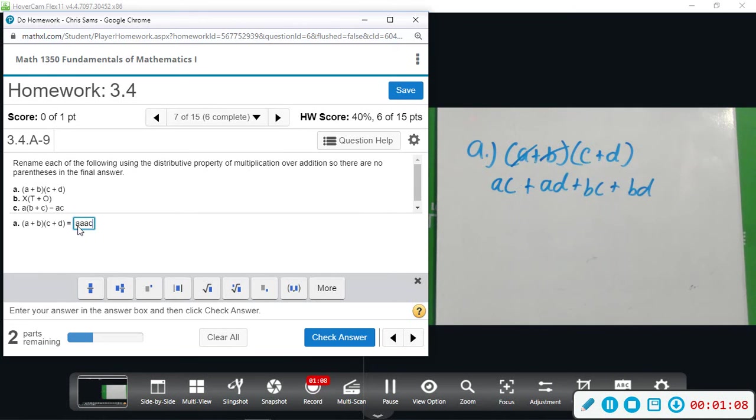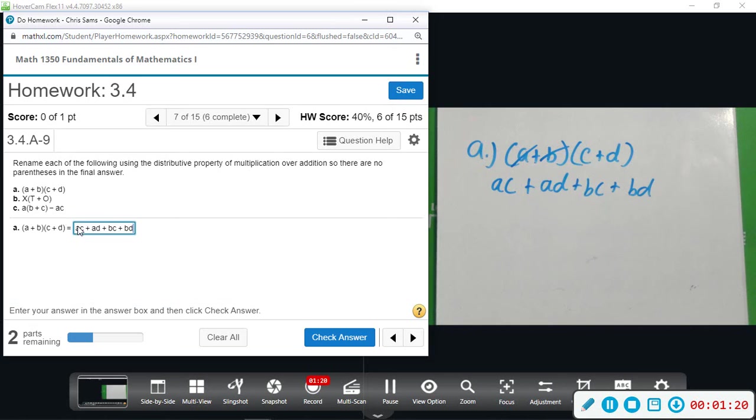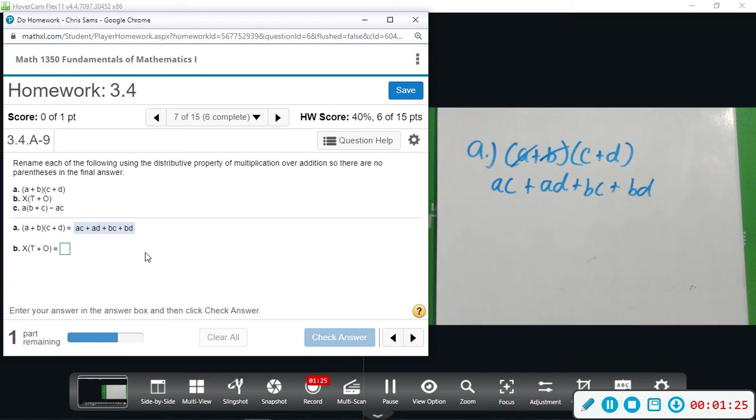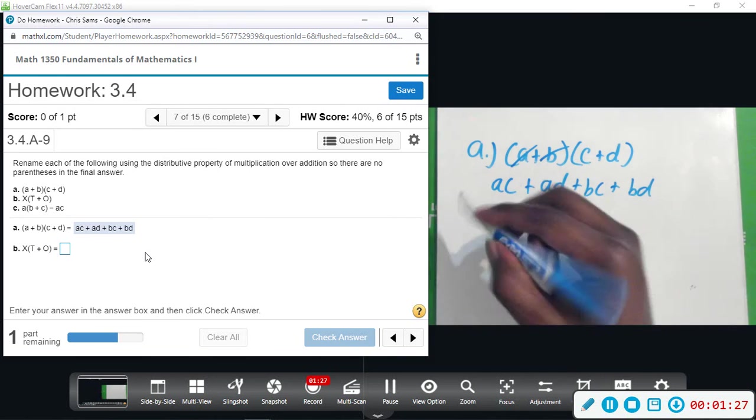So we're going to do AC plus AD plus BC plus BD. Okay, now part B, we're going to distribute the X with the T and O, so (X)(T+O).